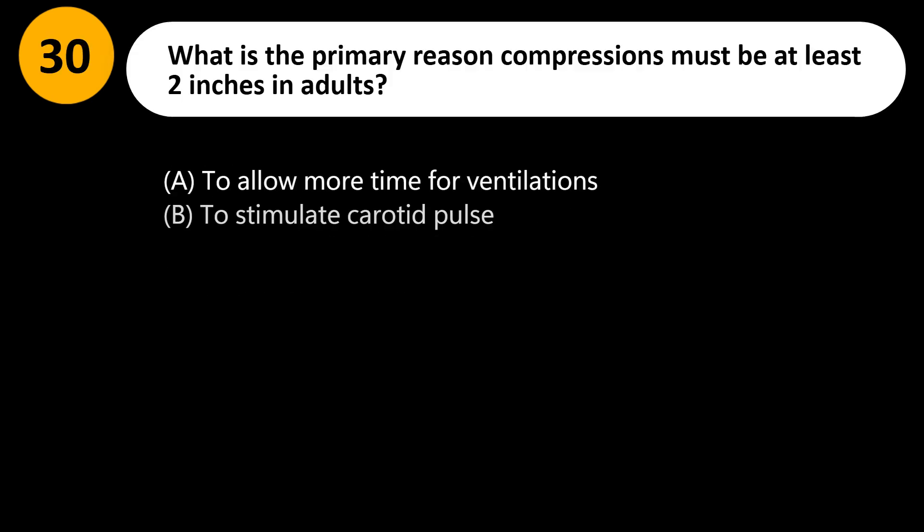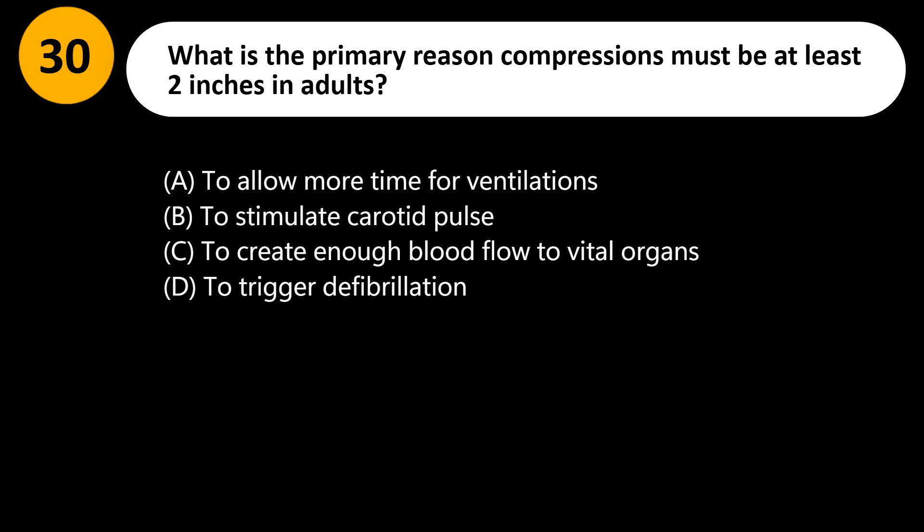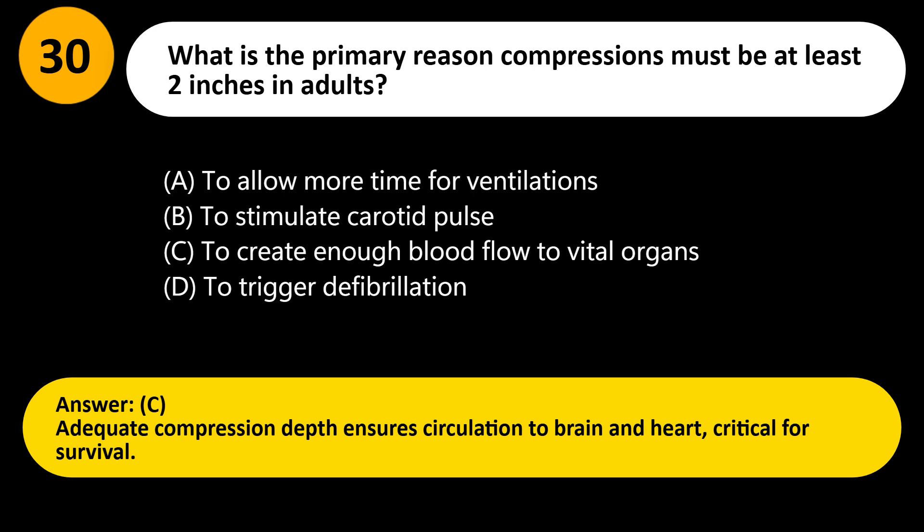What is the primary reason compressions must be at least 2 inches in adults? A) To allow more time for ventilations, B) To stimulate carotid pulse, C) To create enough blood flow to vital organs, D) To trigger defibrillation. Answer: C. Adequate compression depth ensures circulation to the brain and heart, critical for survival.